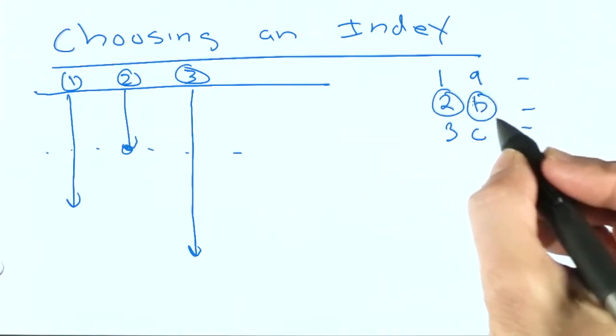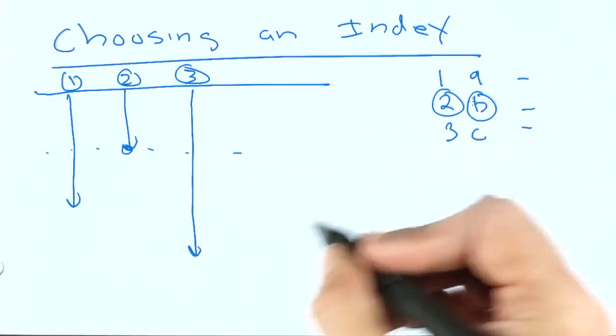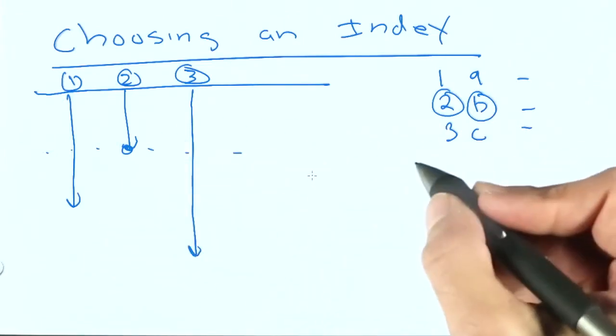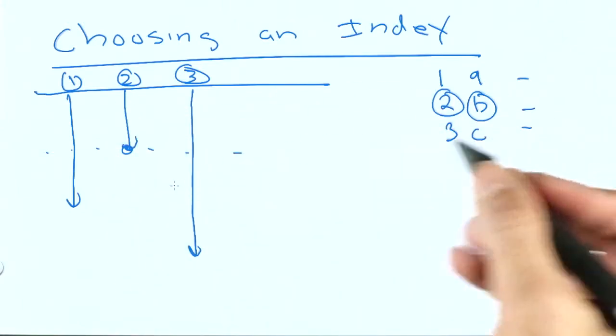This is kind of cool, because it's basically running experiments on your actual data to figure out which index it should use. And you don't have to do anything to make this happen. It just happens behind the scenes.